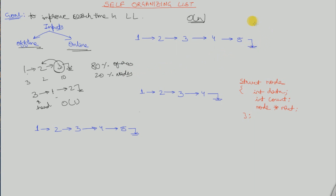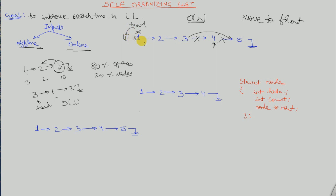The first method is the Move to Front method — move the currently accessed item to the front or head. Suppose our head is at 1 and we are accessing node 4. This method says whenever we access a node, it is expected that the next access will be from the same node as well. So the process unlinks node 4, moves it before the head, and updates the head pointer to 4.